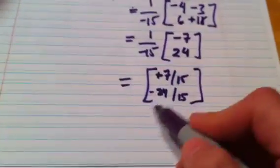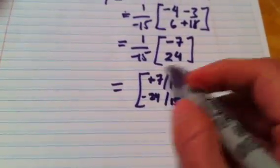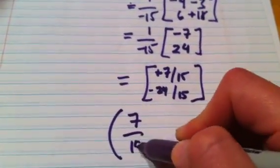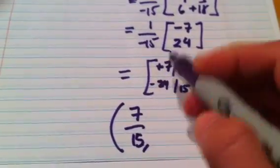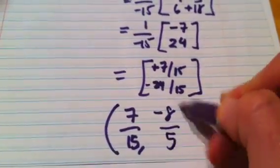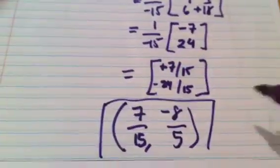And that answer, those are our x and y, so x is 7 fifteenths, and if we just reduce that fraction, divide by 3, we get negative 8 fifths, and that is our final answer.